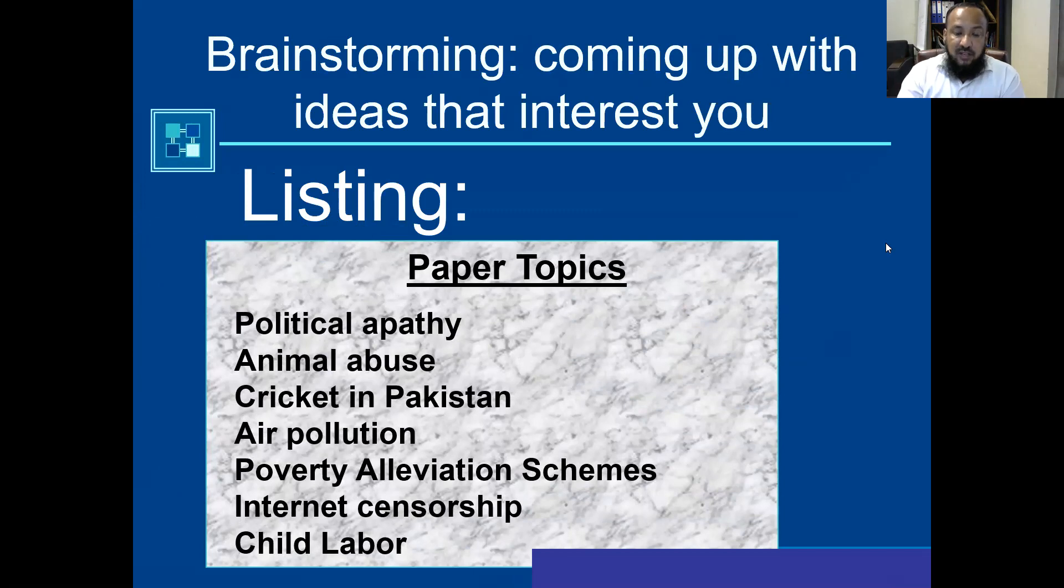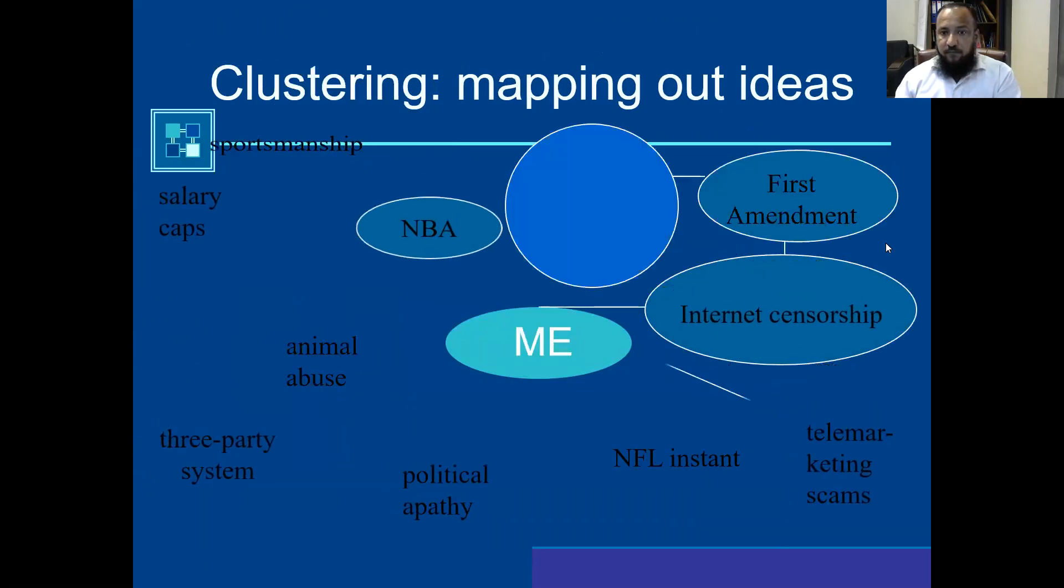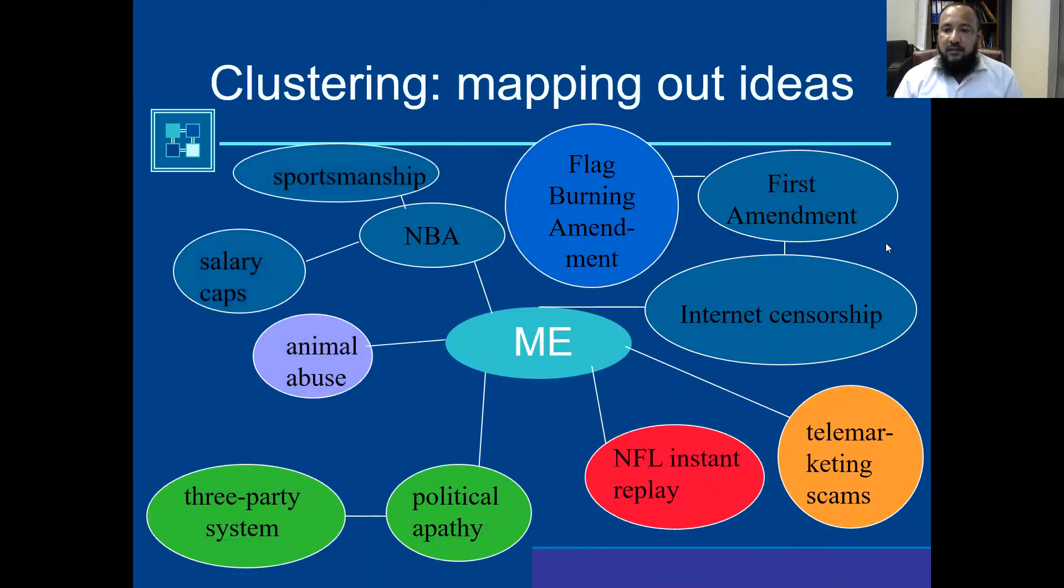Now see, mapping out ideas. You can see very easily written over here that mapping where I have the topics: salary caps, NBA, sportsmanship, flag burning, amendment, First Amendment, internet censorship, political apathy, three-party system. These are the topics. That means I have all these things mapping out that these things are happening. The ideas are happening and they make a junction. You need to select. If you have brainstormed ten topics, ten ideas, you need to select the most relevant one.